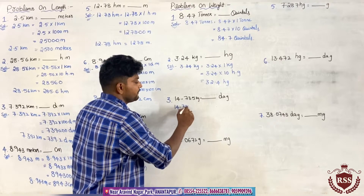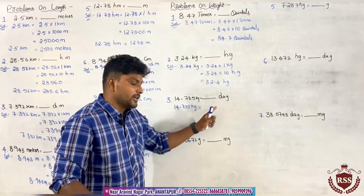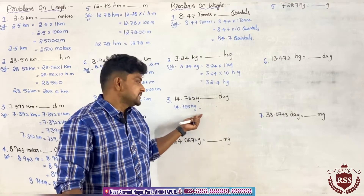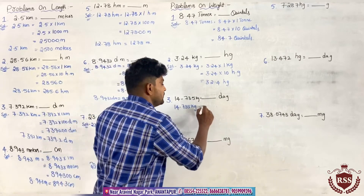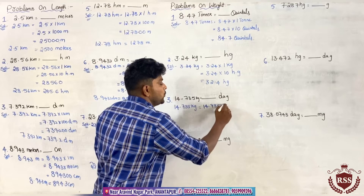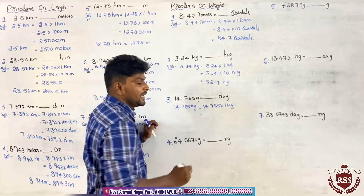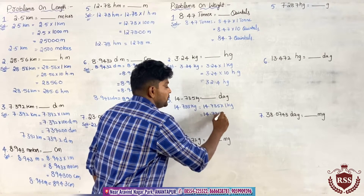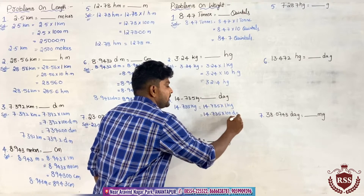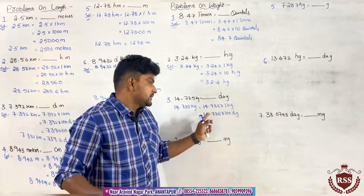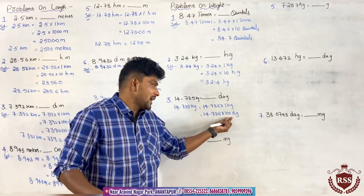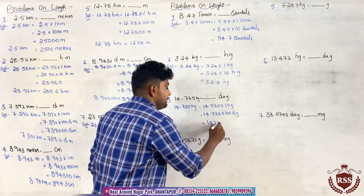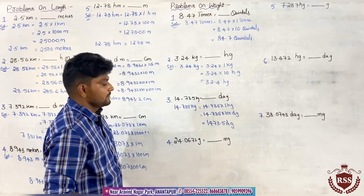Next: 14.735 kilogram has to be converted into decagrams. 1 kilogram equals 100 decagrams. So 14.735 into 100 decagrams. If we multiply with 100, the decimal point moves forward by two digits. It will be 1473.5 decagrams.